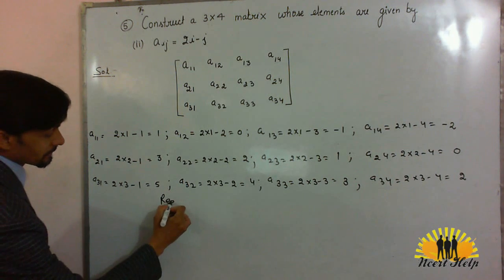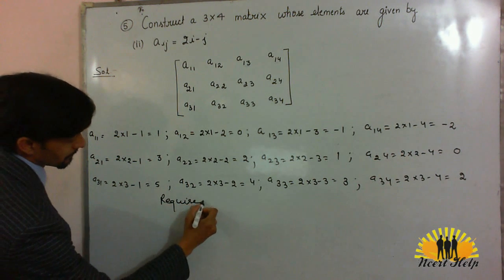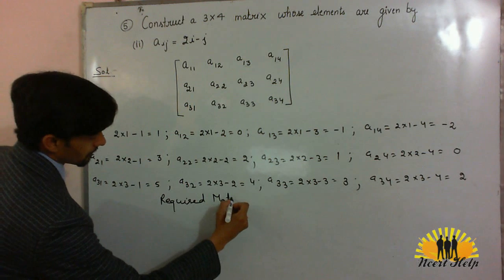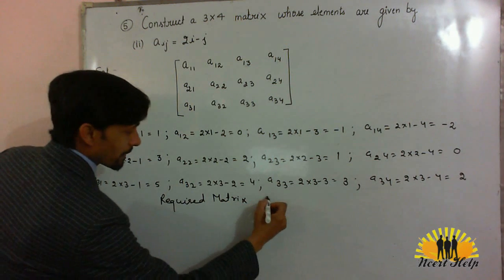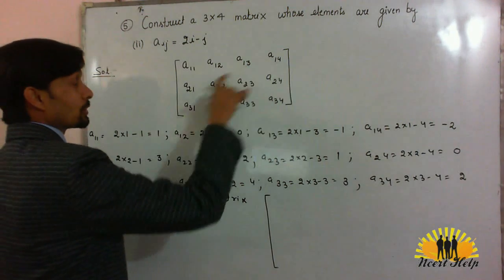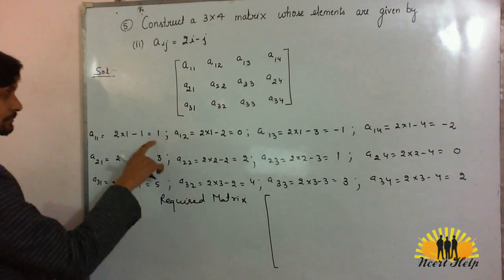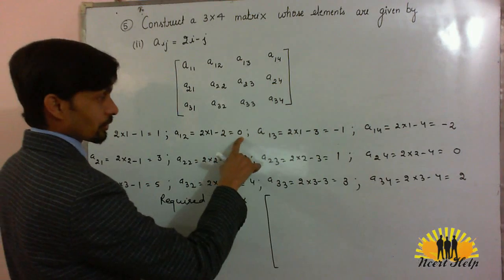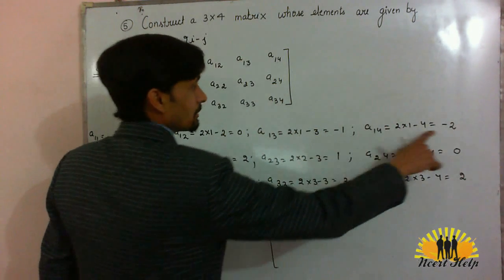So required matrix will be put according to the position written in this matrix: 1, 0, minus 1, minus 2.